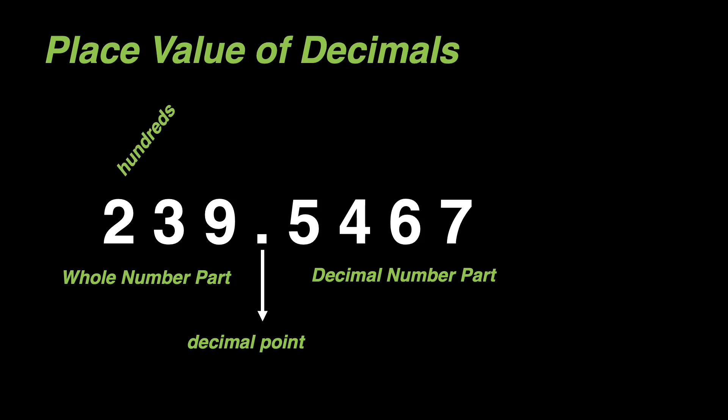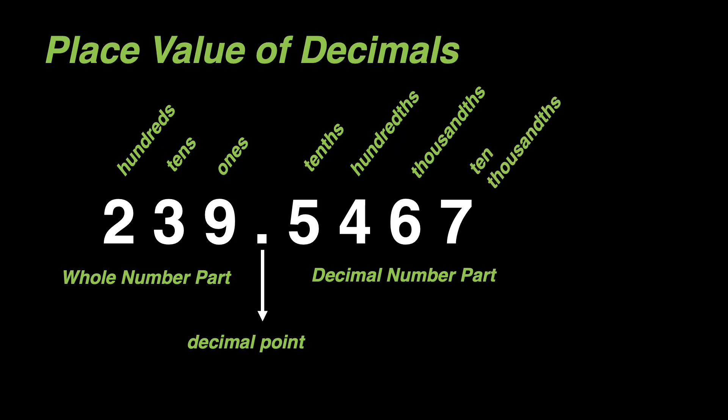2 has a place value of hundreds, 3 has tens, and 9 has ones. For the decimal part, we have tenths for 5, hundredths for 4, thousandths for 6, and ten-thousandths for 7. If you notice, we have '-ths' at the end of each place value in our decimal part because it signifies that these numbers have values that are less than 1.